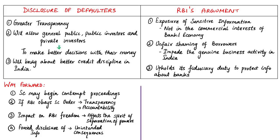Disclosing the names of loan defaulters will bring transparency to the system so that the general public and investors can take better decisions with their money. Disclosure of names of defaulters to the public will help bring about better credit discipline in the country by exposing problems within banks. It is really surprising that RBI, which has been spearheading the fight against bad loans, is unwilling to release vital information on willful defaulters to the public.